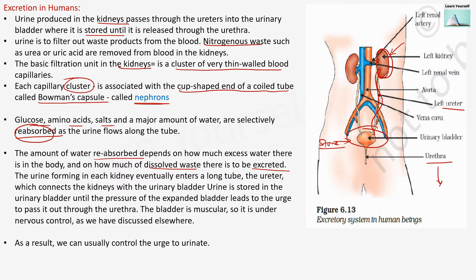The urine forming in each kidney eventually enters a long tube called the ureter, which connects the kidney to the urinary bladder. Urine is stored in the urinary bladder until the pressure of the expanded bladder leads to an urge to pass it through the urethra. The bladder is muscular and under nervous control, which is why we can control the urge to pass urine. The filtration unit is the nephron, which includes Bowman's capsule.